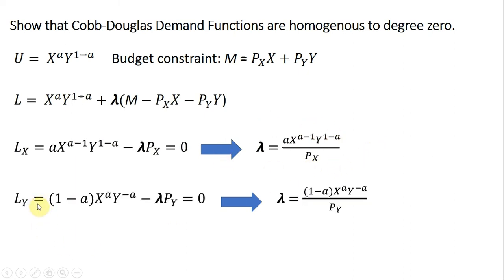The partial derivative of the Lagrangian with respect to good Y. Since Y is being raised to the 1 minus A power, that comes down in front, and then we need to subtract 1 from the exponent here. So 1 minus A minus 1 just leaves us with Y raised to the minus A power. And once again, solving for lambda, we get this result.